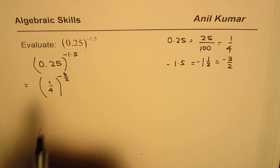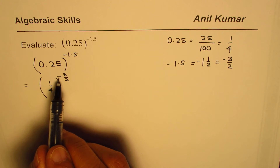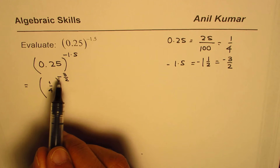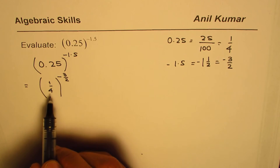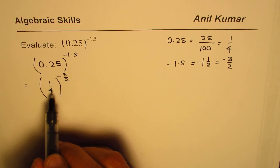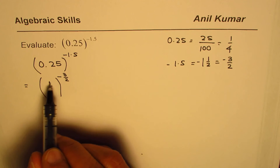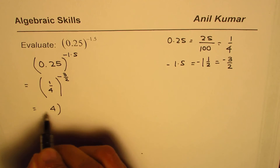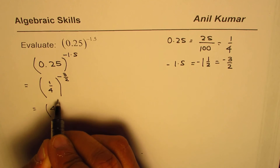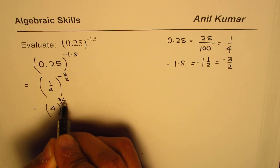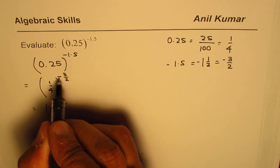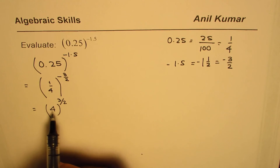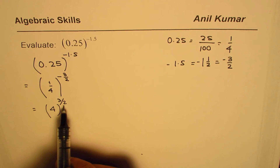Now, what is the meaning of when the power is negative? It means it should be the reciprocal. So that gives us 4 to the power of 3 over 2. We have taken care of the negative part, and now we have 4 to the power of 3 over 2.